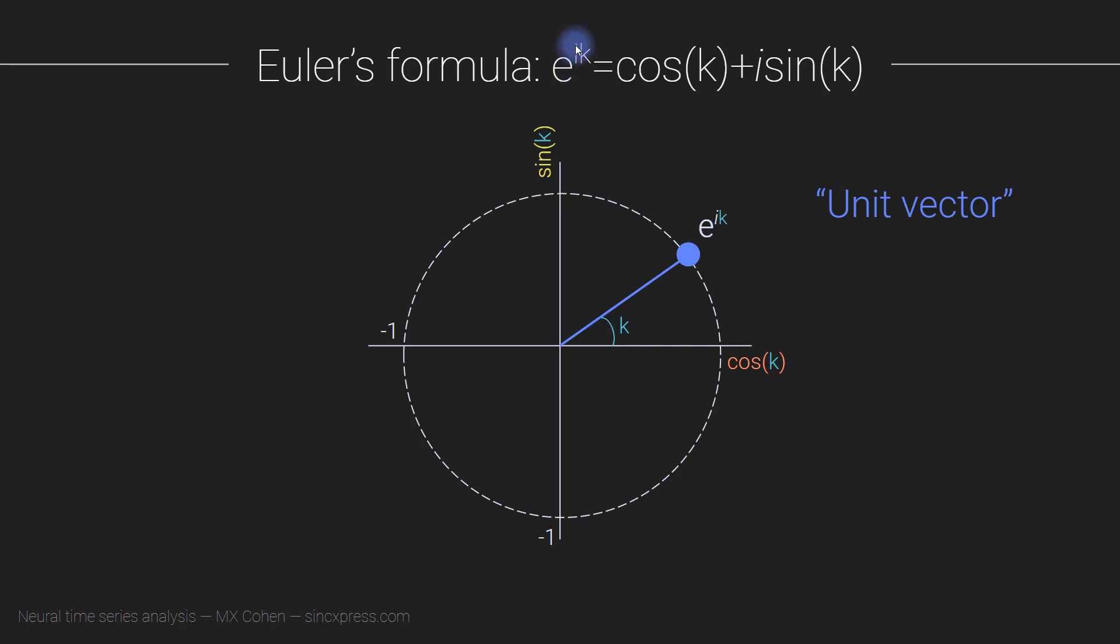So how do we know that these two sides of the equation are the same? Well, this comes from a Taylor expansion of cosine and sine and e to the ik. And it turns out if you solve this Taylor expansion, you would find that adding up cosines and sines or the Taylor expansions for cosines and sines and attaching the imaginary operator to all the sine terms that turns out to be exactly the same thing as the Taylor expansion of e to the ik. That proof is something you would learn in an advanced calculus course. I'm not going to discuss it here.